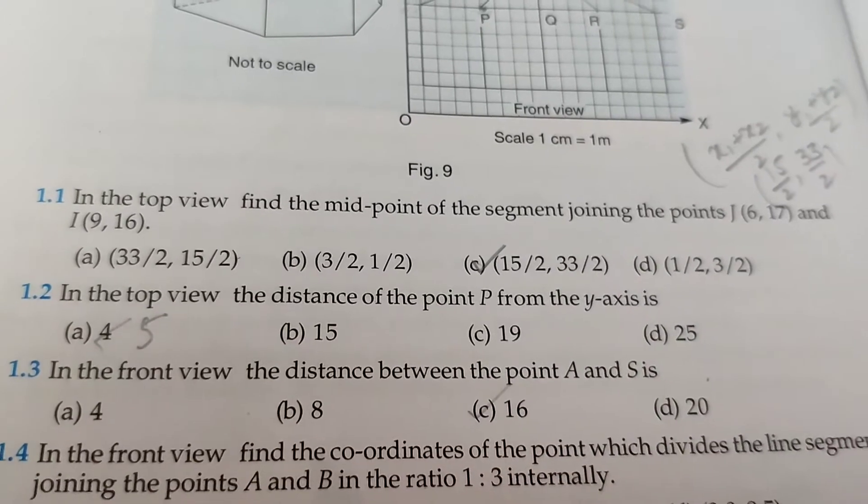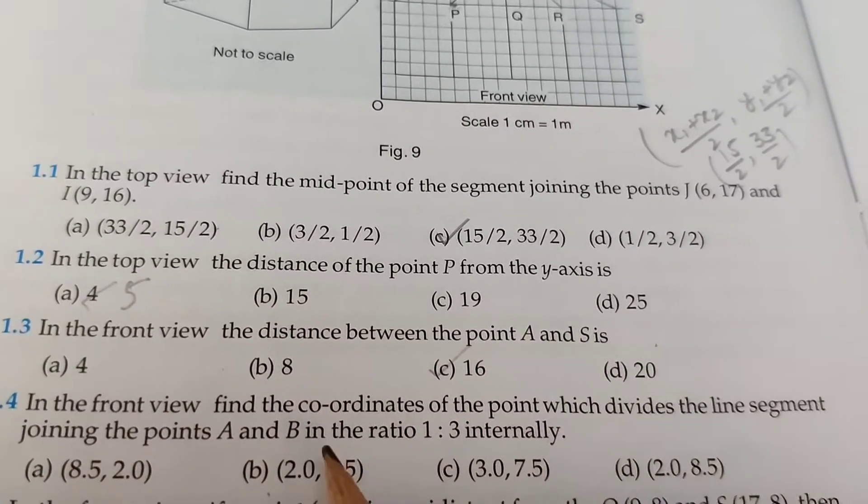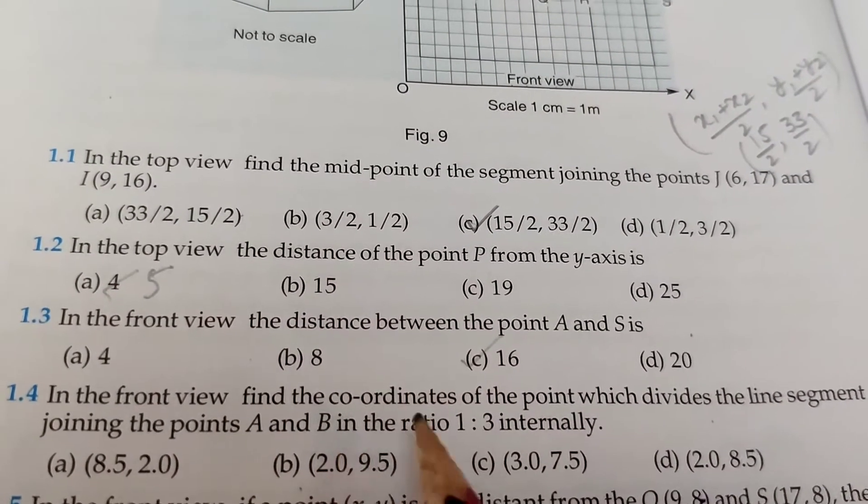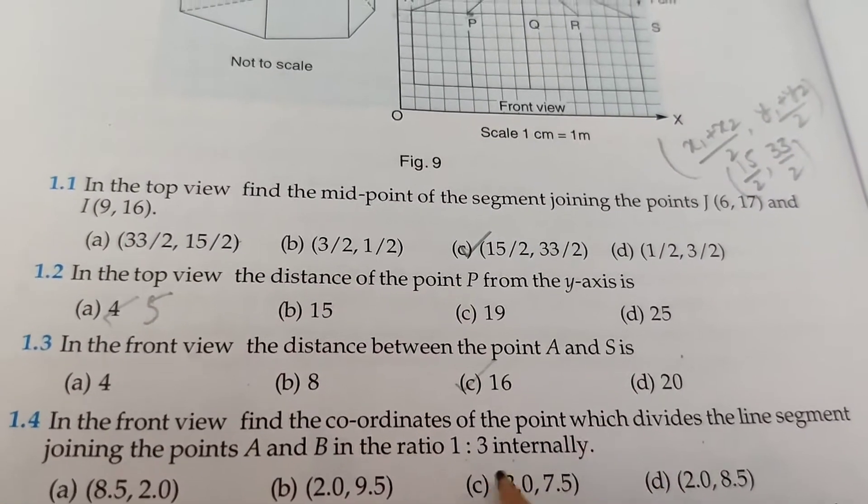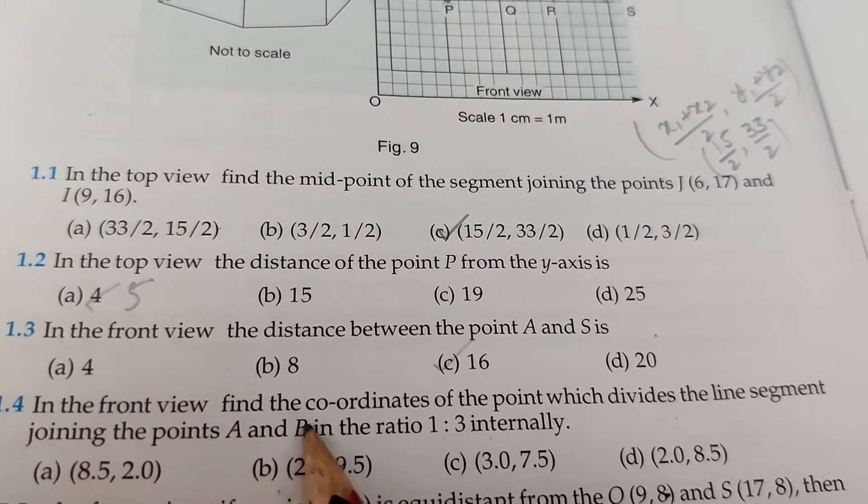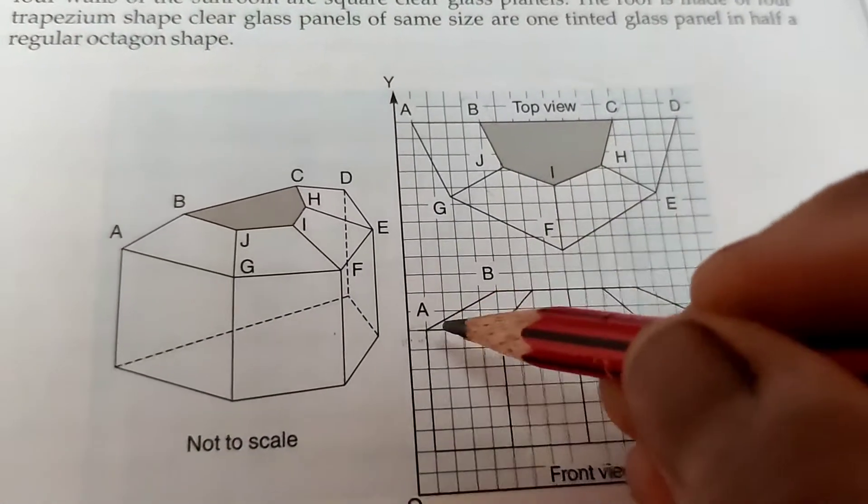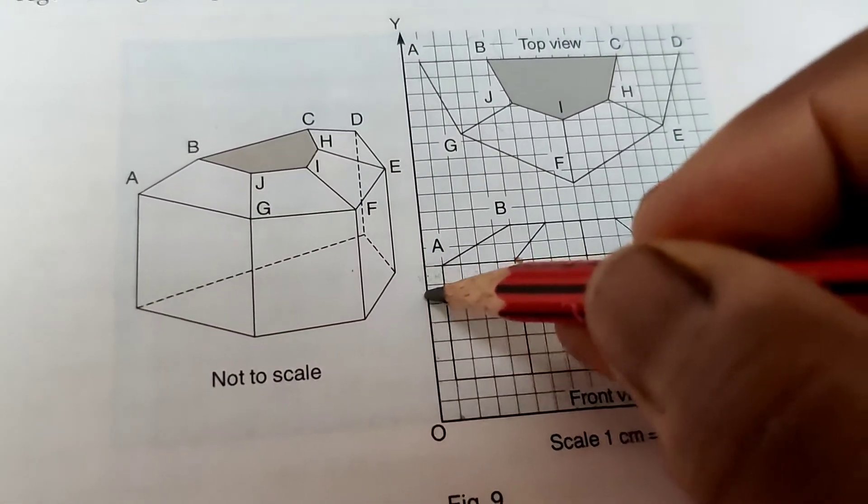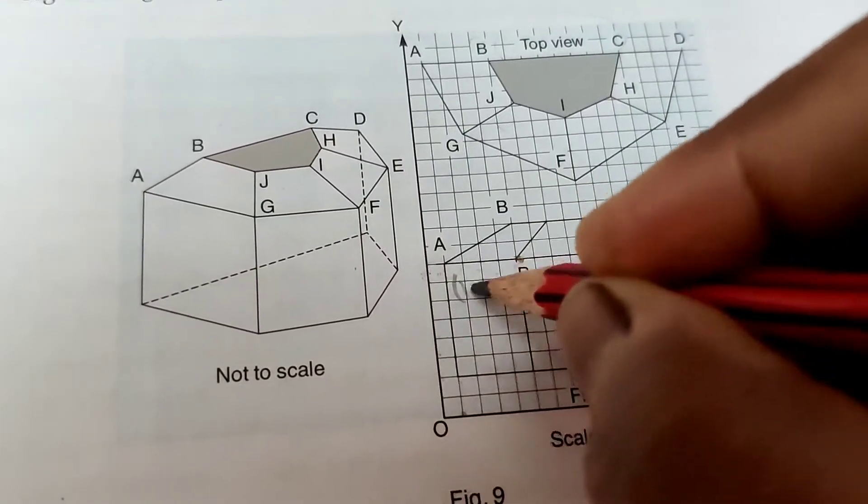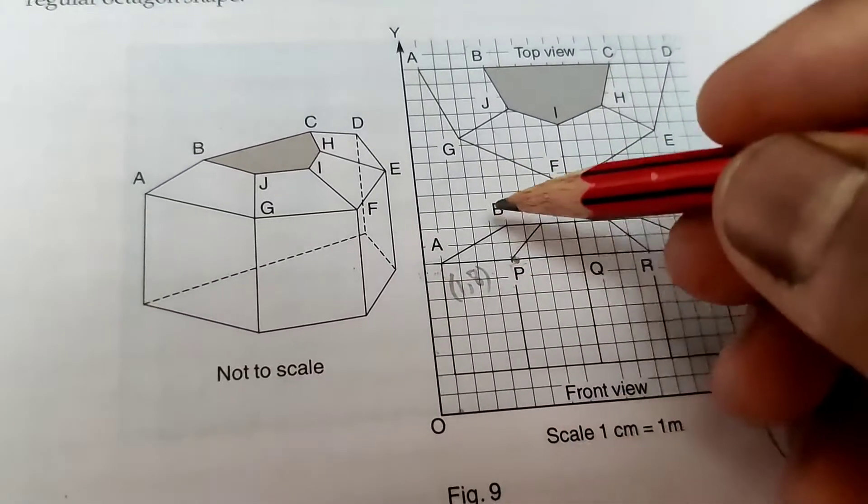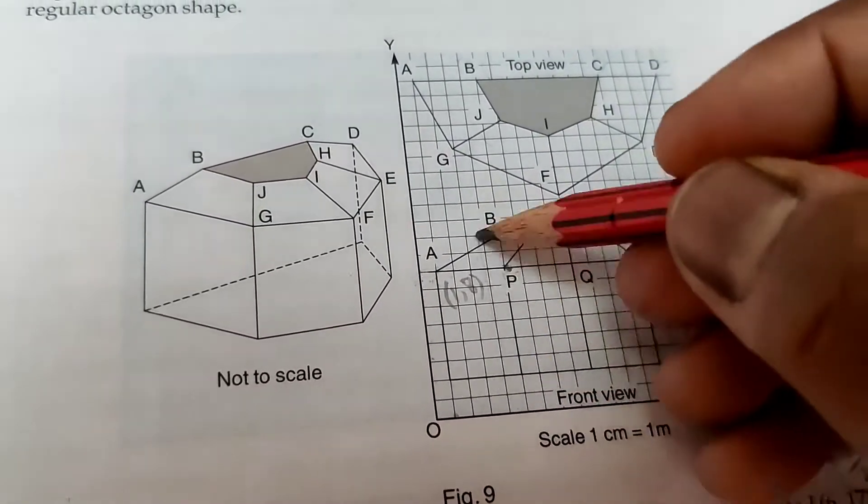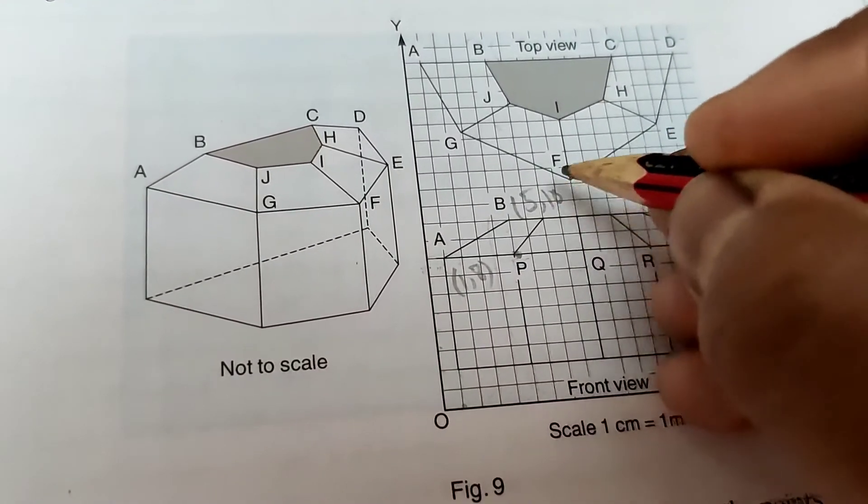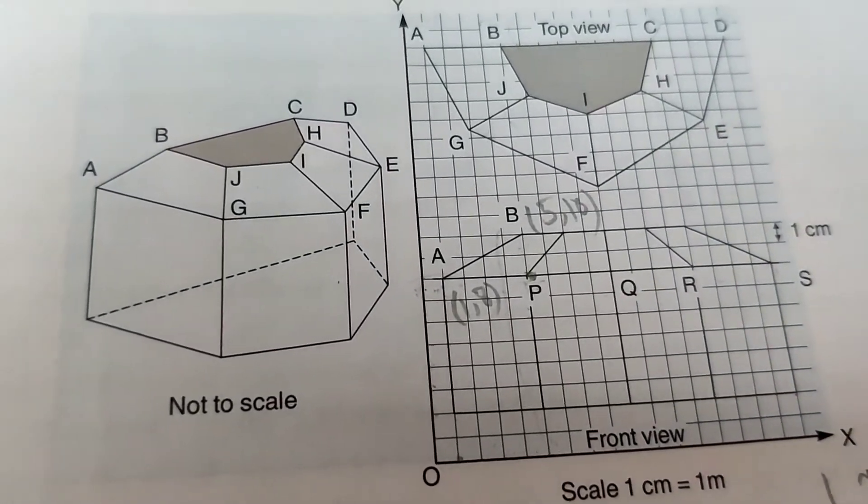In the front view, the coordinates of a point which divides the line segment joining points A and B in the ratio 1:3 internally. First find the coordinates of A and B. The coordinates of A are 1, 8. Now the coordinates of B are 5, 10. The ratio is 1:3.